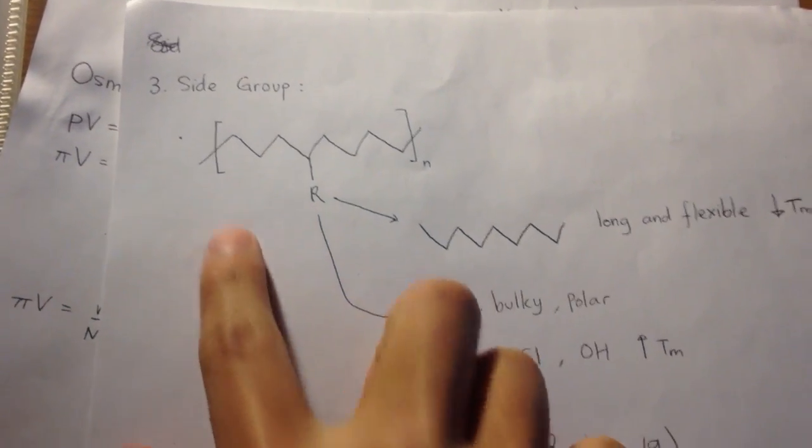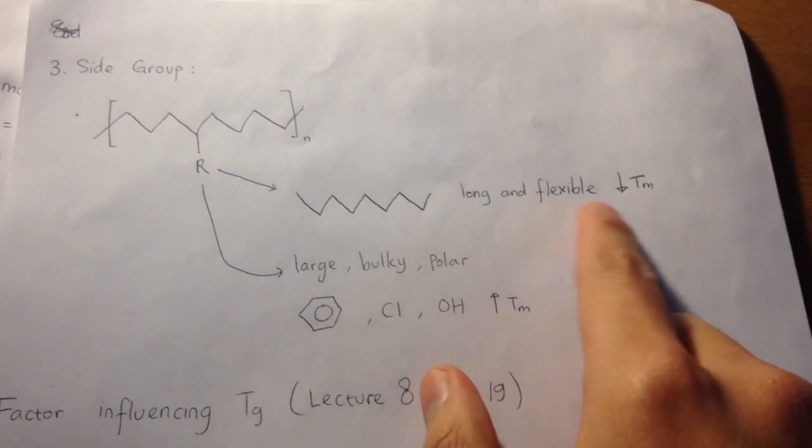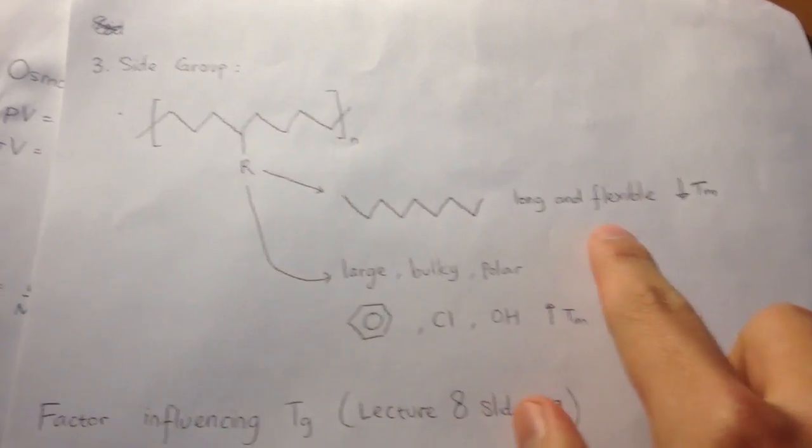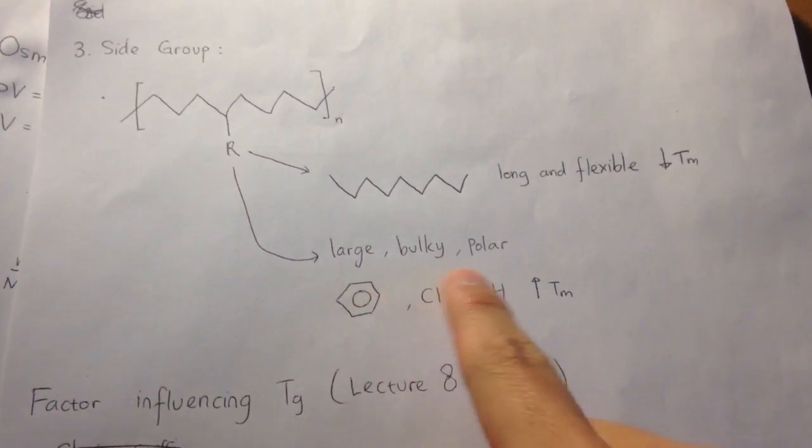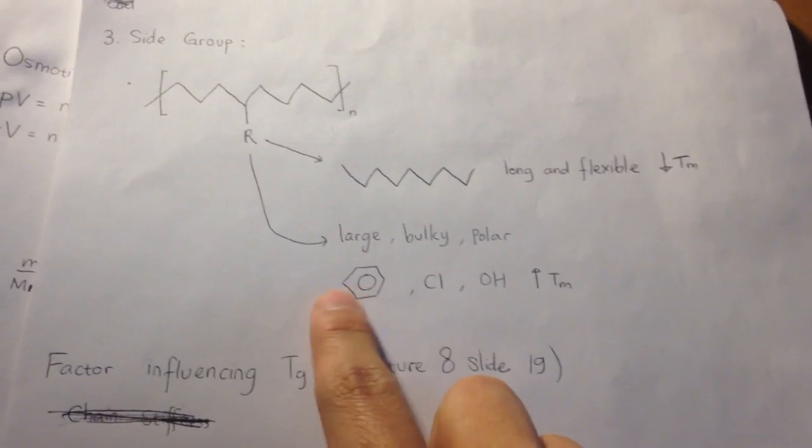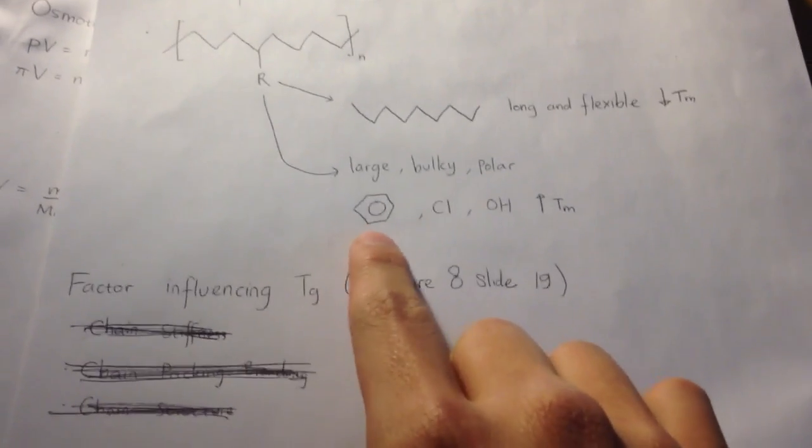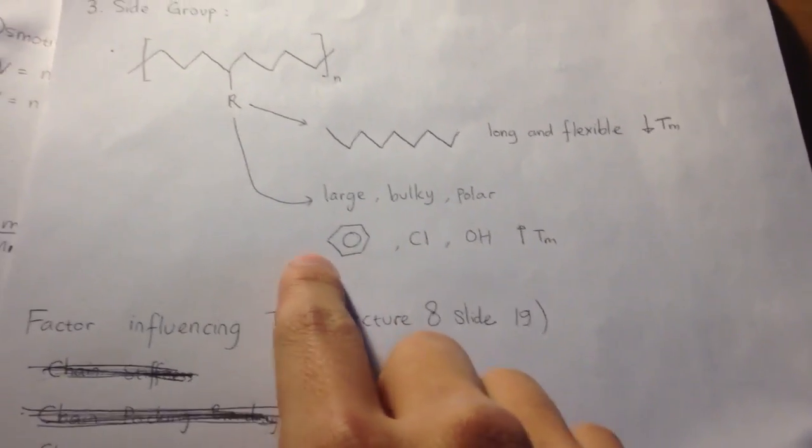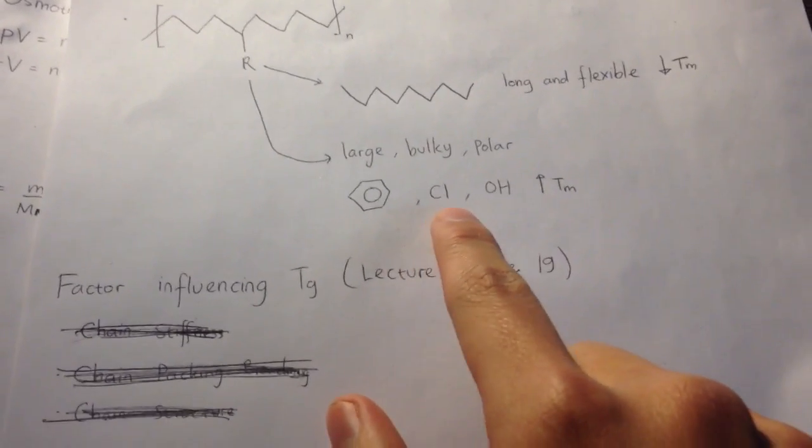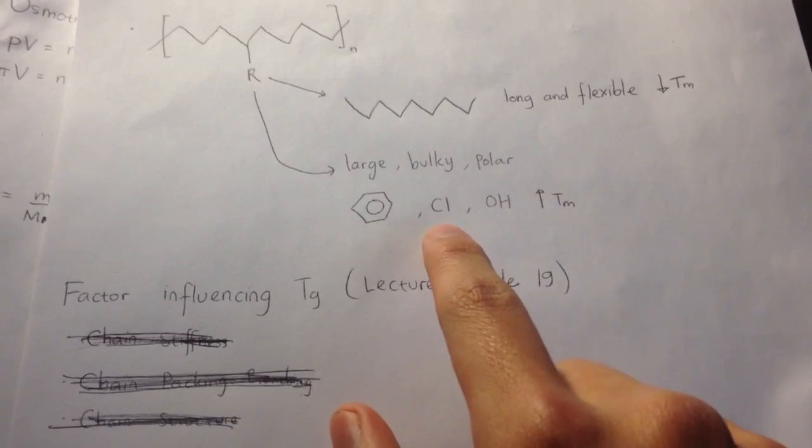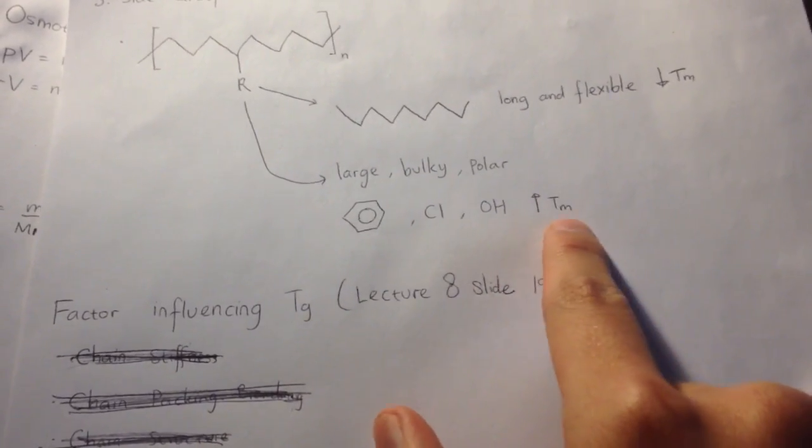And the third part, they discuss about the side group. You can either have long and flexible side group, and that would decrease the melting point. Or you can have large, bulky, or polar. For example, benzene, that would be stiff and increase stiffness. Cl, that is very negative, so it will create a strong dipole-dipole interaction. And OH, that would create hydrogen bond. So it will increase the melting point.